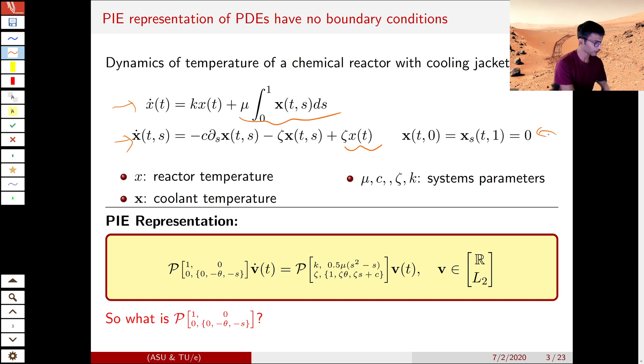If we were to rewrite this using PIE representation, we get a very simple equation that is defined by two PI operators, which is on the left side and the right side. And this PI operator acts on V, which we'll refer to as PI state.